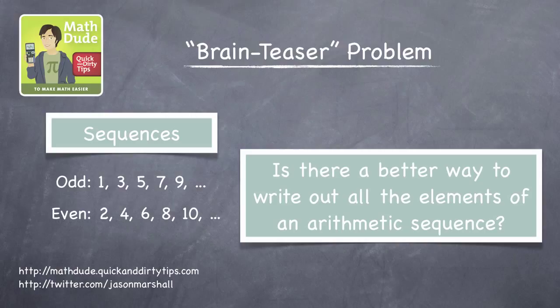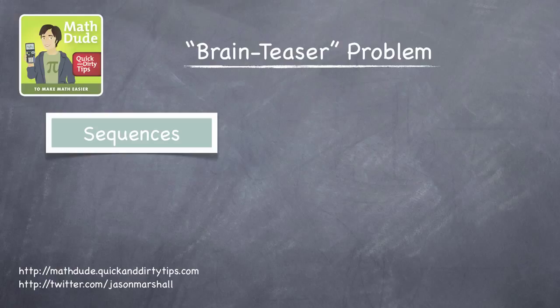As an example, let's figure out a way to more succinctly write the arithmetic sequence 1, 5, 9, 13, 17.